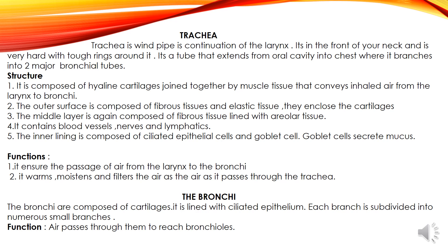The trachea is the windpipe and a continuation of the larynx. It is in the front of the neck and has hard, tough rings around it. It is a tube that extends from the oral cavity into the chest, where it branches into major bronchial tubes. It is composed of hyaline cartilage joined together by muscle tissue that conveys inhaled air from the larynx to the bronchi. The outer surface is composed of fibrous tissue and elastic tissue that enclose the cartilage. The middle layer is composed of fibrous tissue lined with glandular tissue, and it contains blood vessels, nerves and lymphatics. The inner lining is composed of ciliated epithelial cells and goblet cells. The goblet cells secrete mucus.